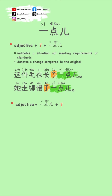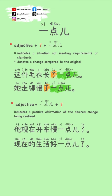When 了 is placed after EDR, the comparison indicates a positive affirmation of the desired change being realized. For instance, 现在生活好一点了 — life now is better than before, which indicates a recognition of the positive change.